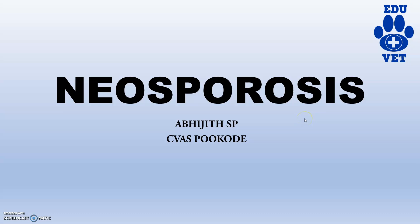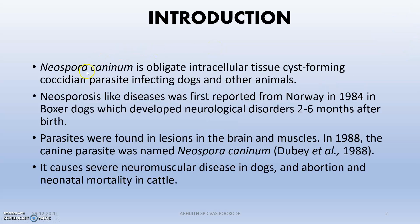Neospora caninum is a protozoan parasite under the unit protozoology. It is an obligate intracellular tissue cyst-forming coccidian parasite, with parasites found in lesions in the brain and muscles. It causes severe neuromuscular disease in dogs and abortion and neonatal mortality in cattle, making it a very important disease in dogs and cattle.